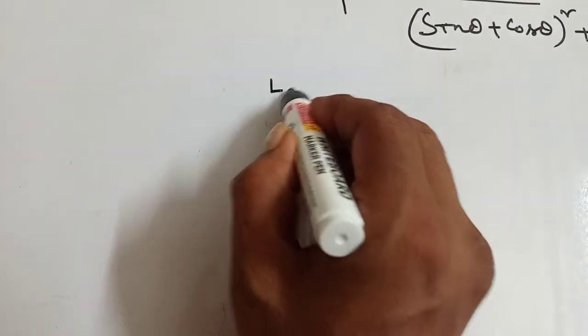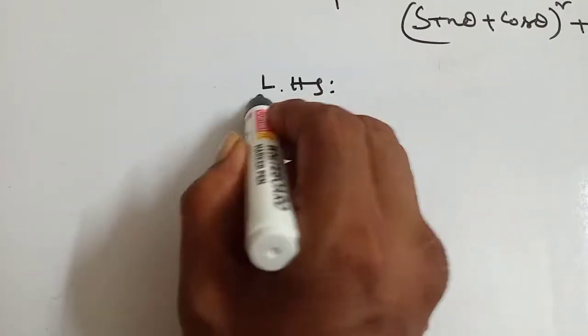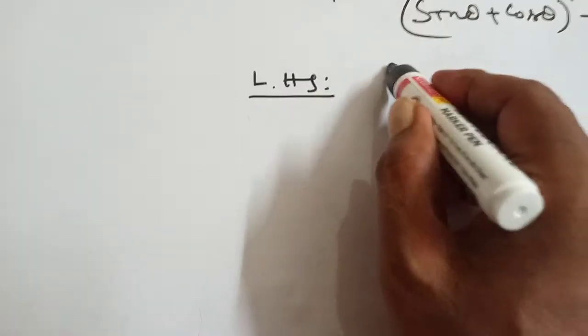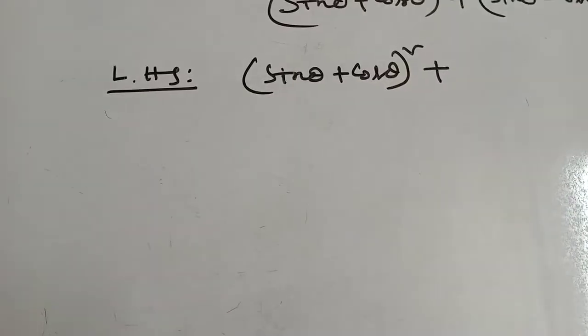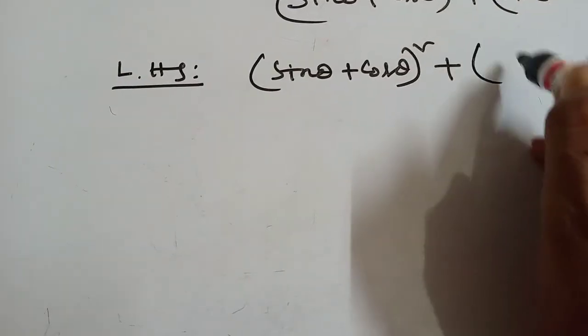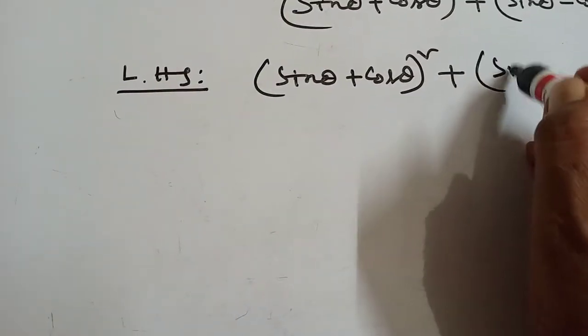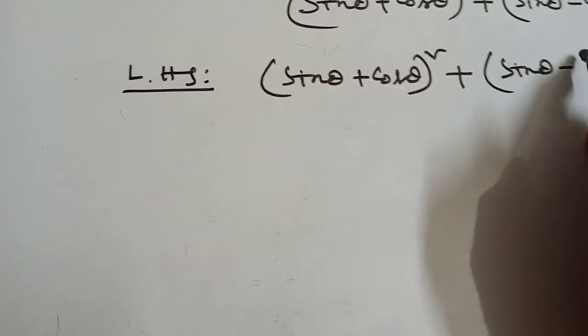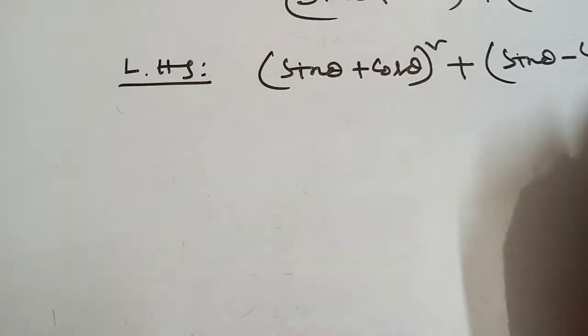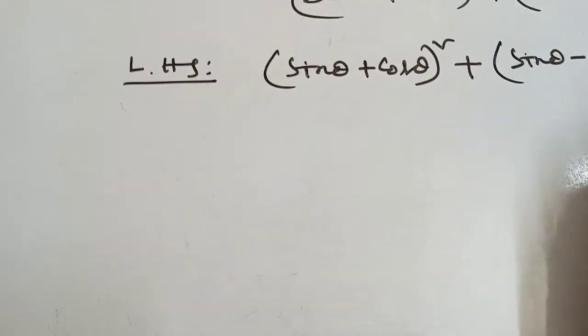Left hand side: sin theta plus cos theta whole square plus sin theta minus cos theta whole square.